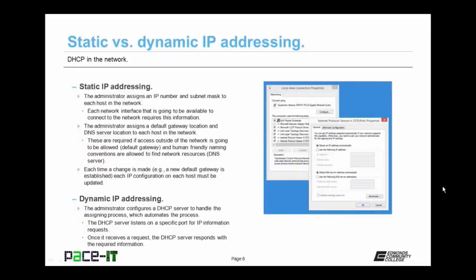With static IP addressing, the administrator assigns an IP address and subnet mask to each host in the network, whether it be a PC, router, or some other piece of electronic equipment. Each network interface that will connect to the network requires this information. The administrator also assigns a default gateway location and DNS server location to each host. These settings are required if access to outside networks is going to be allowed — through the default gateway — and if human-friendly naming conventions are going to be allowed — through a DNS server. Each time a change is made, such as a new default gateway being established, each IP configuration on each host must be updated, which is why it becomes cumbersome and complicated as the network grows.